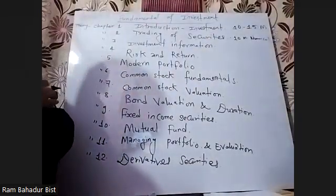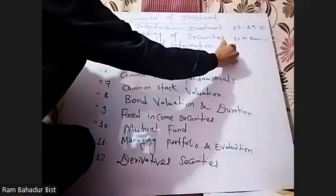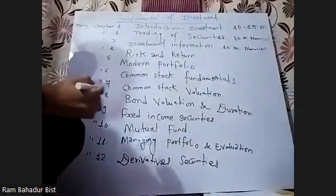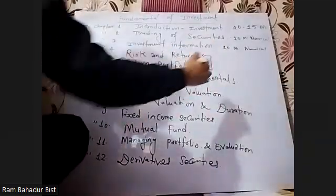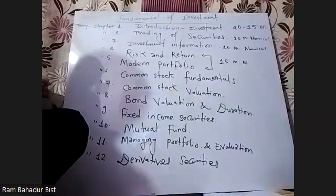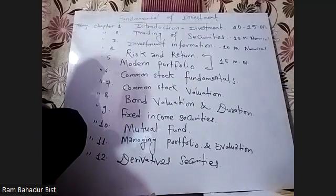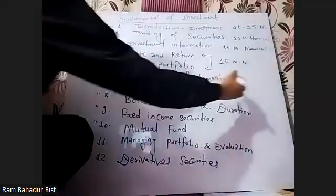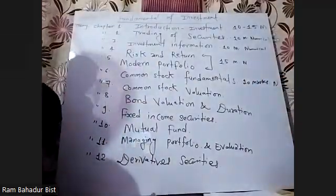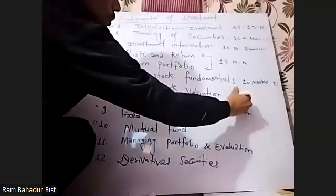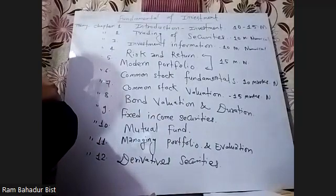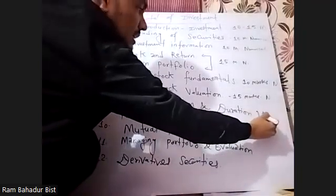Chapter 3: investment information, 10 max numerical. Your return, modern portfolio combined — 15, numerical. Common stock fundamental, duration — 10 max numerical.